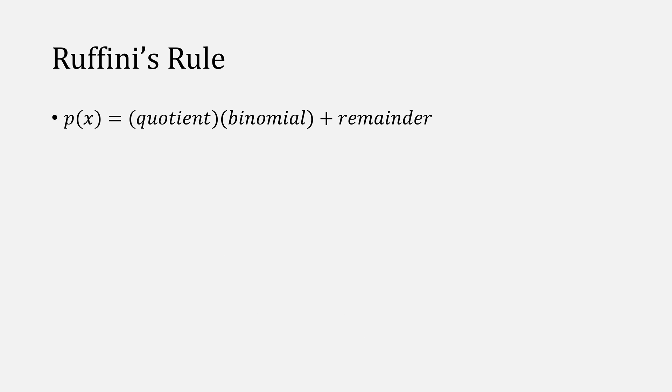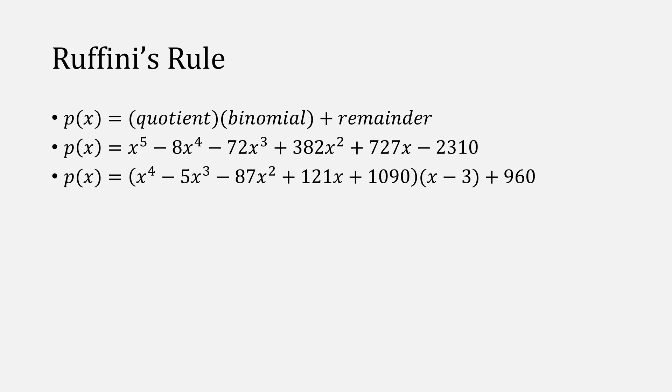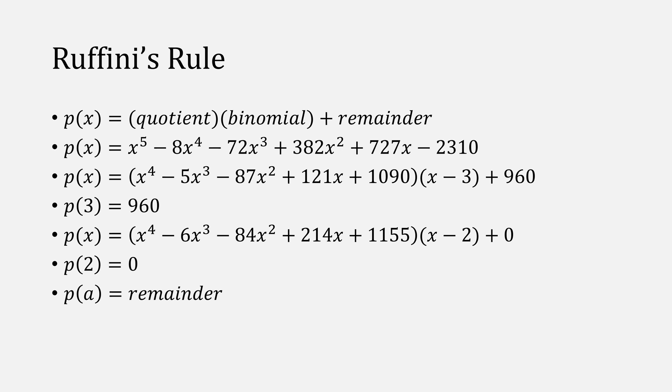Ruffini's rule says that every polynomial is a quotient times a binomial plus a remainder. So for example, the polynomial that we've been using, our first example was 3. So we write x minus 3 and a remainder of 960, and this was our quotient. Notice that p of 3 is equal to 960. With p of 2, we found this quotient, x minus 2 and a remainder of 0. Notice that p of 2 is equal to 0. So p of whatever value a is equal to our remainder, and this is the basis of Ruffini's rule, that p of x is equal to q of x times x minus a plus p of a.